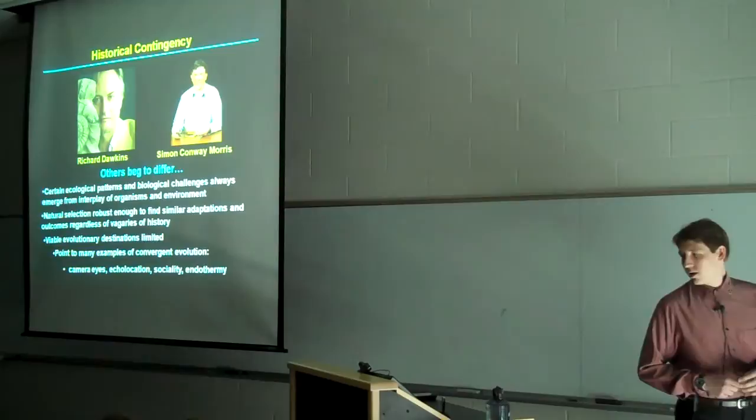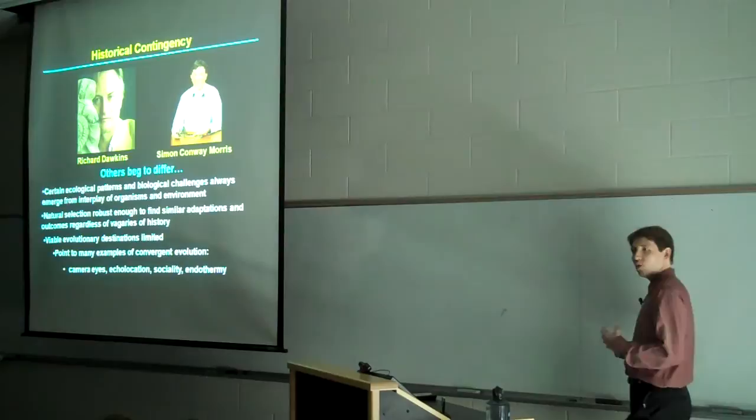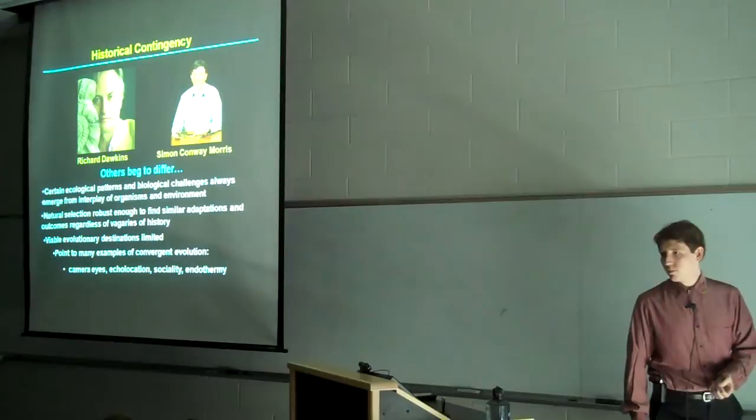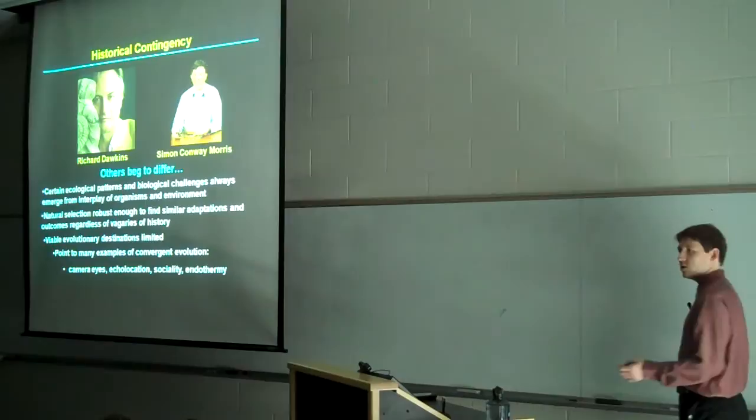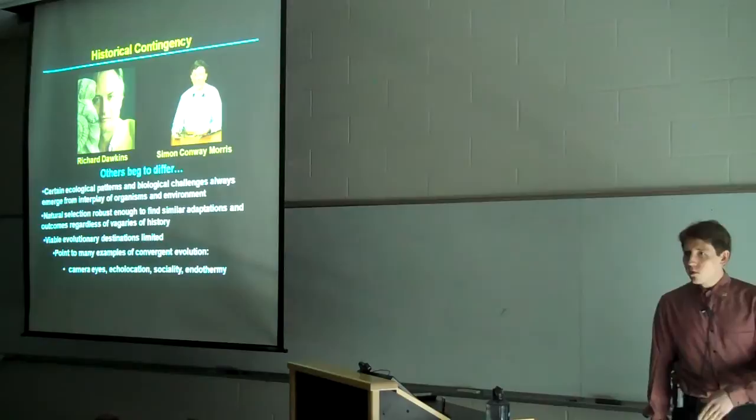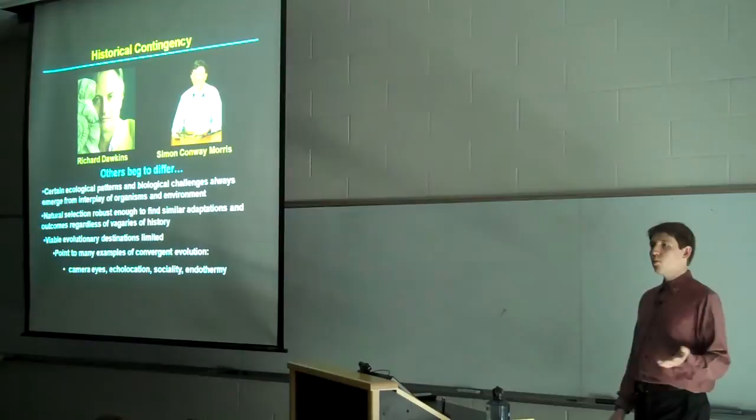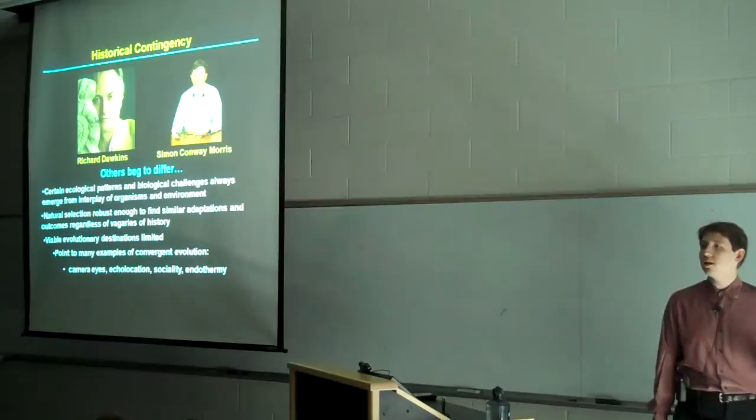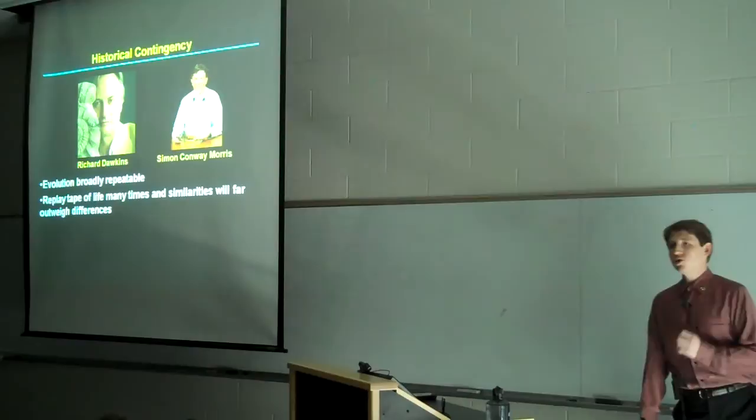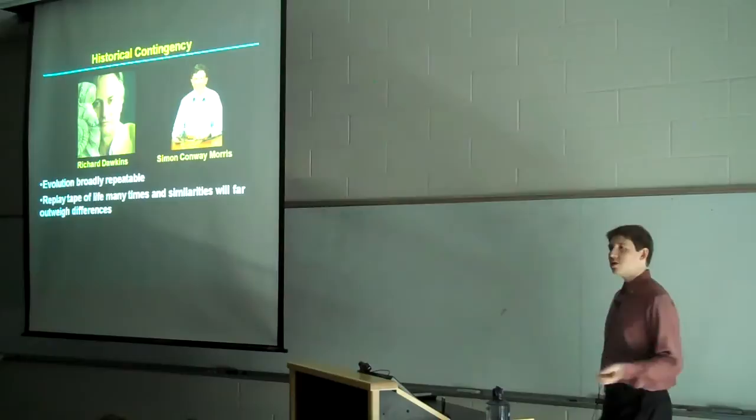As a consequence, Gould asserted, evolutionary outcomes are fundamentally contingent upon the exact details of their evolutionary histories. Evolutionary outcomes are unpredictable. And, he said, if one were to replay the tape of life from various places in the distant past, the result today would be a far different living world than the one of which we are a part. Others, of course, disagree. Richard Dawkins and Simon Conway Morris have pointed out that certain ecological patterns and biological challenges seem to always emerge from the interplay of organisms in their environments. Natural selection has been robust enough to find similar adaptations and outcomes regardless of the exigencies and vagaries of history. Moreover, viable evolutionary destinations and outcomes are limited, and, as evidence, they point to the many examples of convergent evolution of the world, such as camera eyes and echolocation, sociality, endothermy, the list can go on and on.